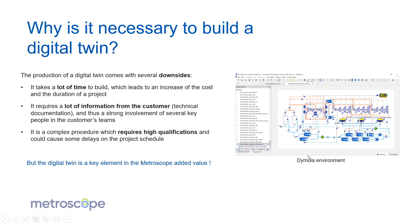So why is it necessary to use a digital twin? Most of our competitors use statistical modeling for alerting and diagnosis on power plants. The production of a digital twin does come with several downsides: it takes a lot of time to build, especially when working with nuclear power plants that are very old installations with hard-to-read original documentation. It is complex and increases project cost for clients. It also requires a lot of technical documentation and a customer interface with strong process knowledge, and it requires high qualifications that can cause schedule delays.